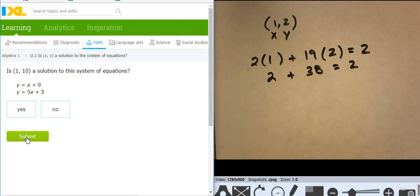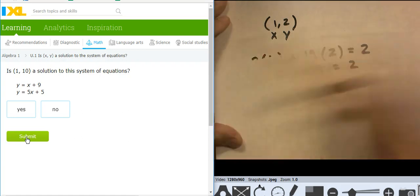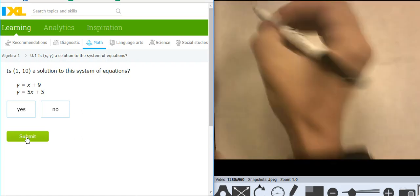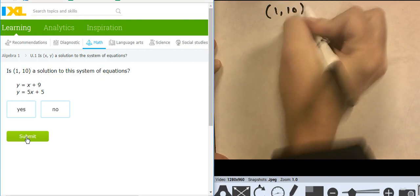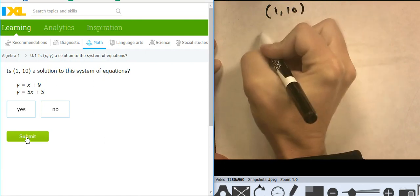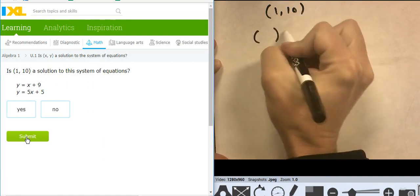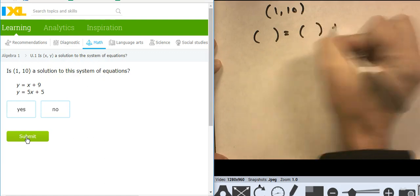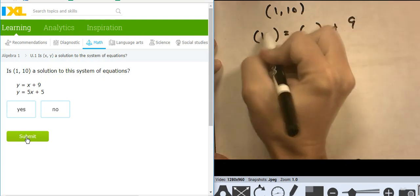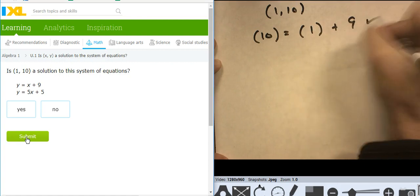And let's go on to another one. So is (1, 10) a solution to this, y equals x plus 9? Y equals x plus 9. So far, it's looking good.